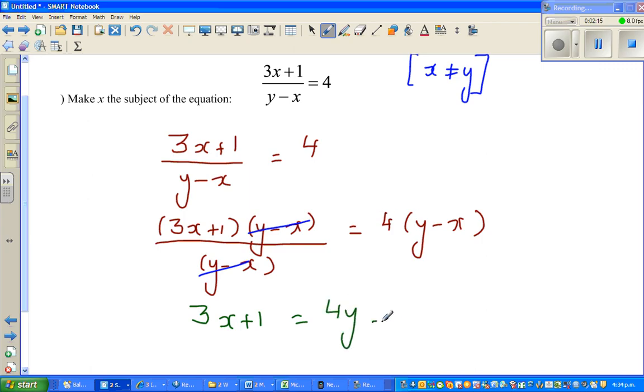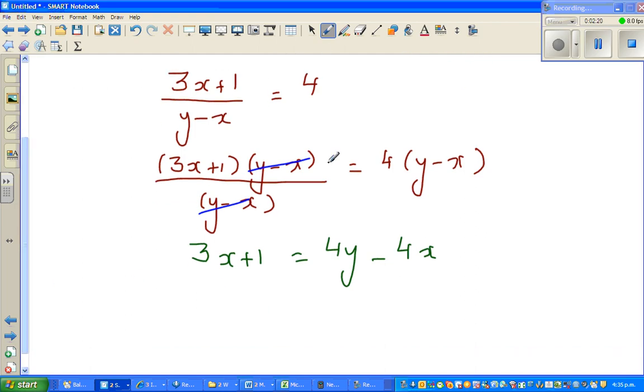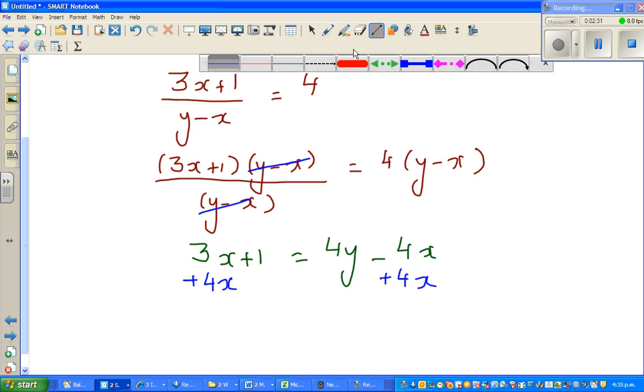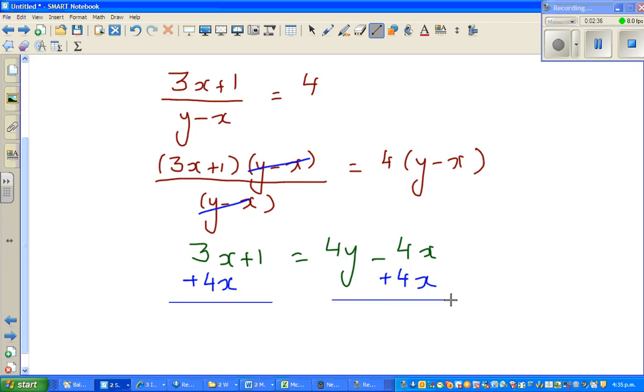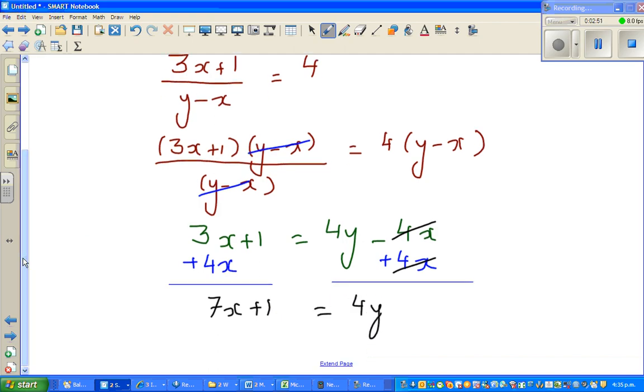Let me group the x's on one side. To eliminate this minus 4x on the right hand side, I'm adding 4x to this side, so I also add 4x to this side. These get cancelled, so you've got 3x plus 4x which is 7x plus 1 equals 4y.